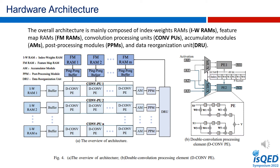The data from IW RAMs and FM RAMs are loaded into buffers, then sent to COMPUs. The IW RAM provides kernel-level index and weight for each corresponding COMPU. FM RAMs provide feature maps for M input channels contained in COMPUs. D-COMPE is mainly composed of two 3-to-2 multiplexers, MAC1 and MAC2, and two processing elements, PE1 and PE2.